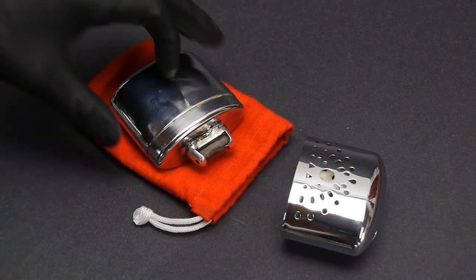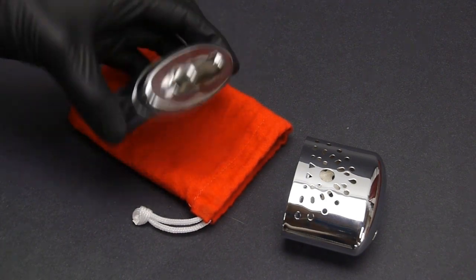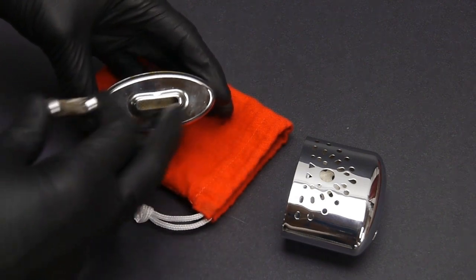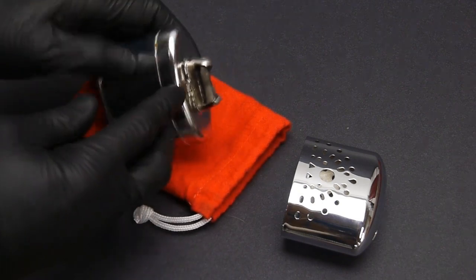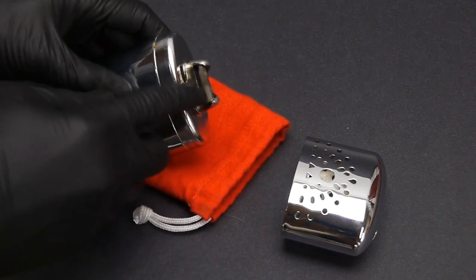A related bit of tech are these catalytic hand warmers. So the idea here is that you fill up the wick chamber with something, usually not methanol, something more like white gas. And then you put this on here, and the screen is coated with platinum.